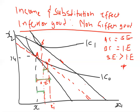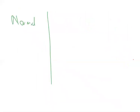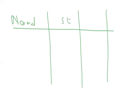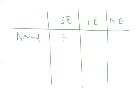This is the case of a non-Giffen inferior good. Now let me do a comparison. I'll set up columns for: substitution effect, income effect, and net effect. In the case of the normal good, the substitution effect is positive and the income effect is also positive. So they reinforce each other, giving a large positive change overall.